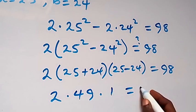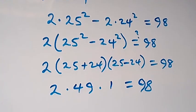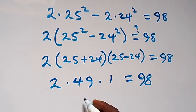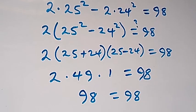Then from here this is 2, 25 plus 24 here we have 49, then also here this is 1, will this be equals to 98 from here. Then 2 times 49 times 1 this is 98 which is equals to 98. Then we have the left hand side equals to the right hand side and from here we conclude that a is 25.